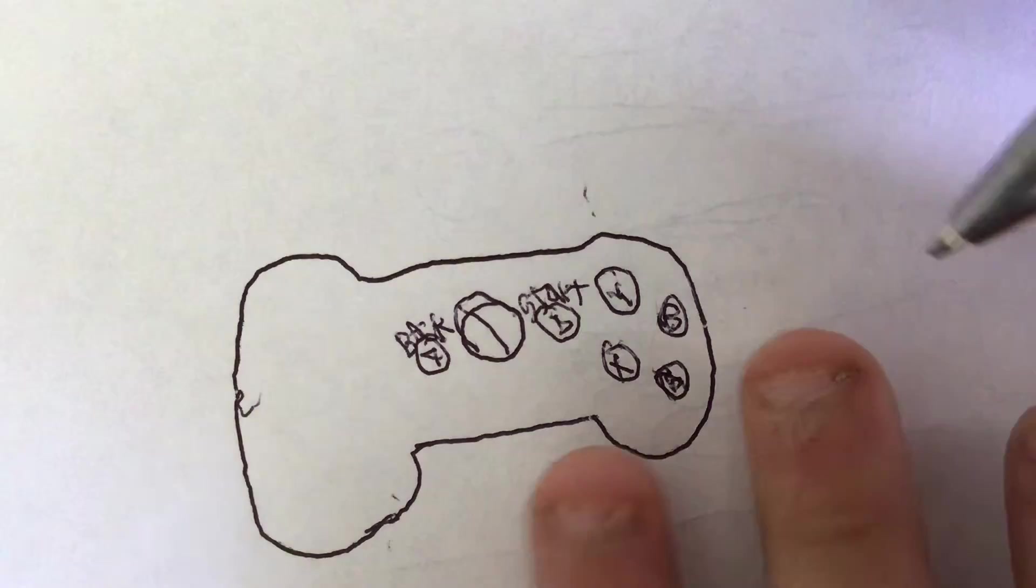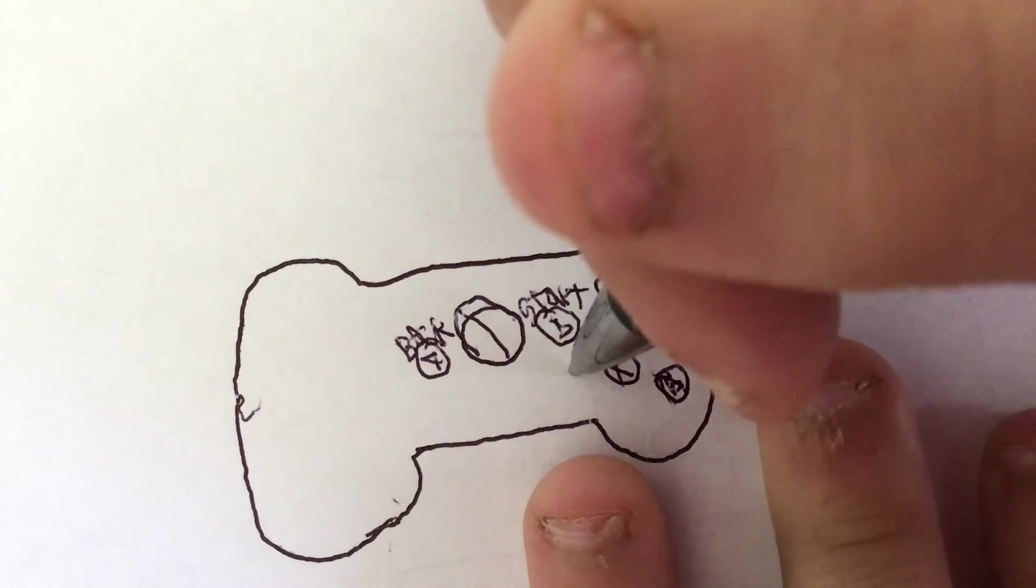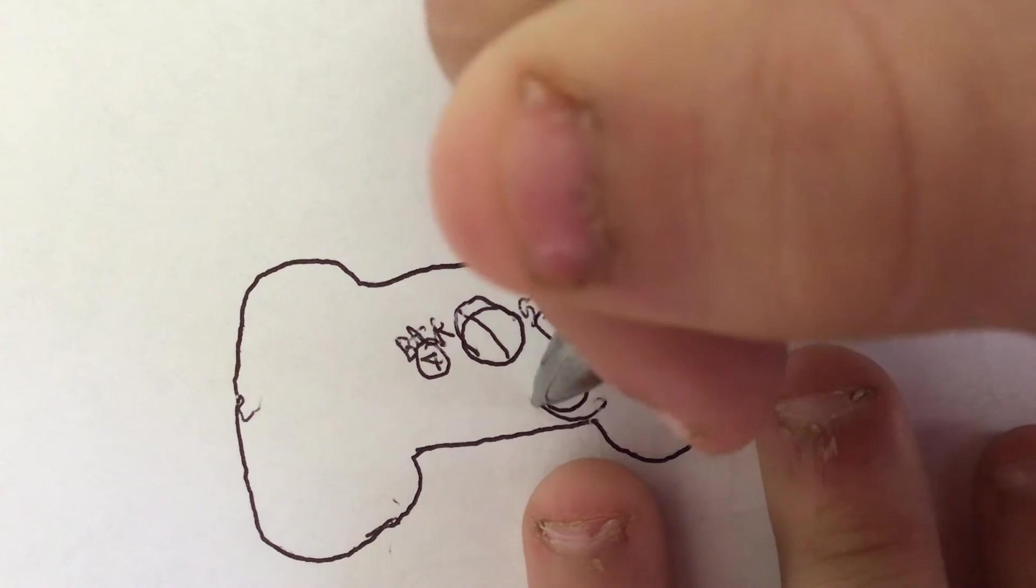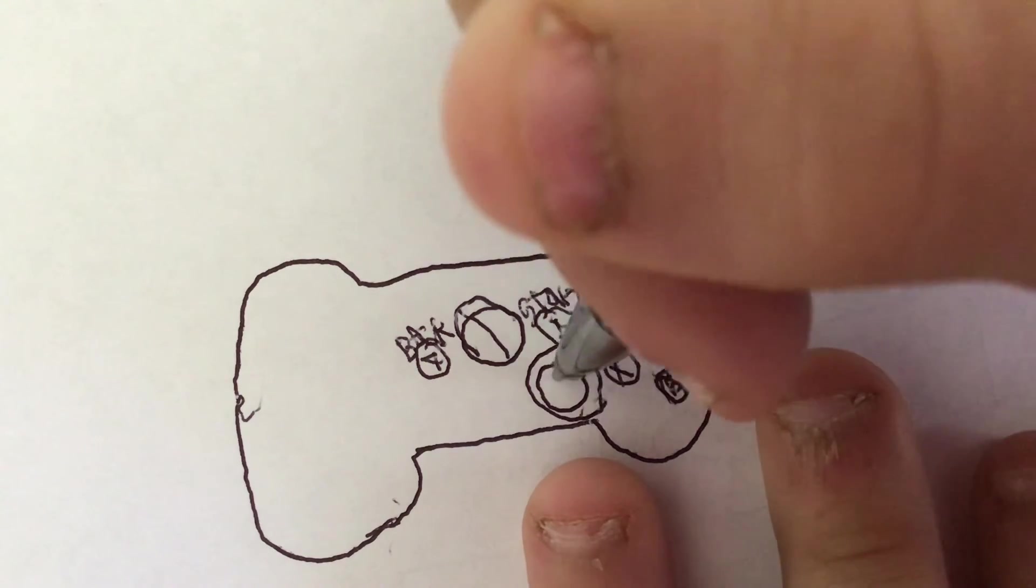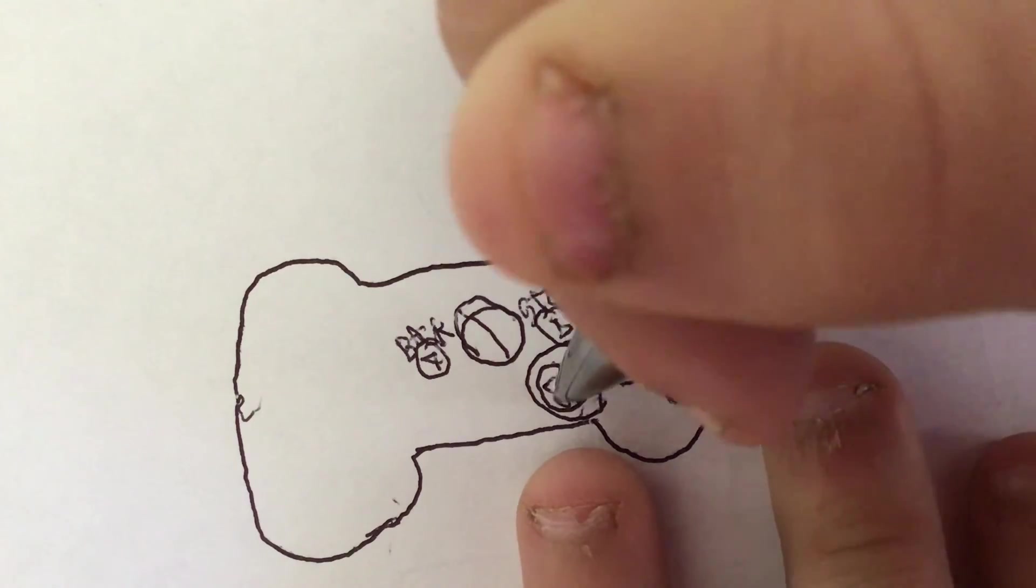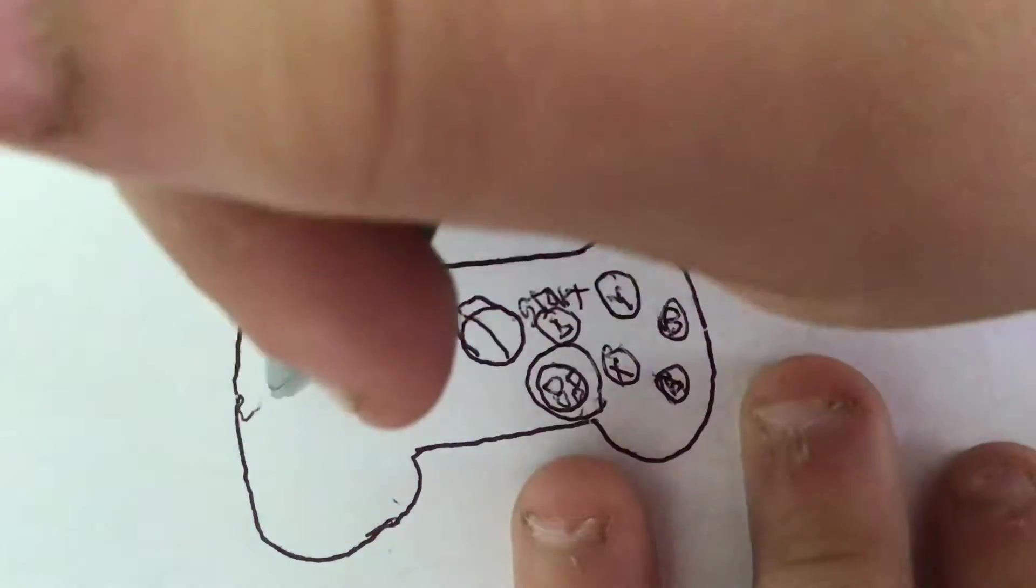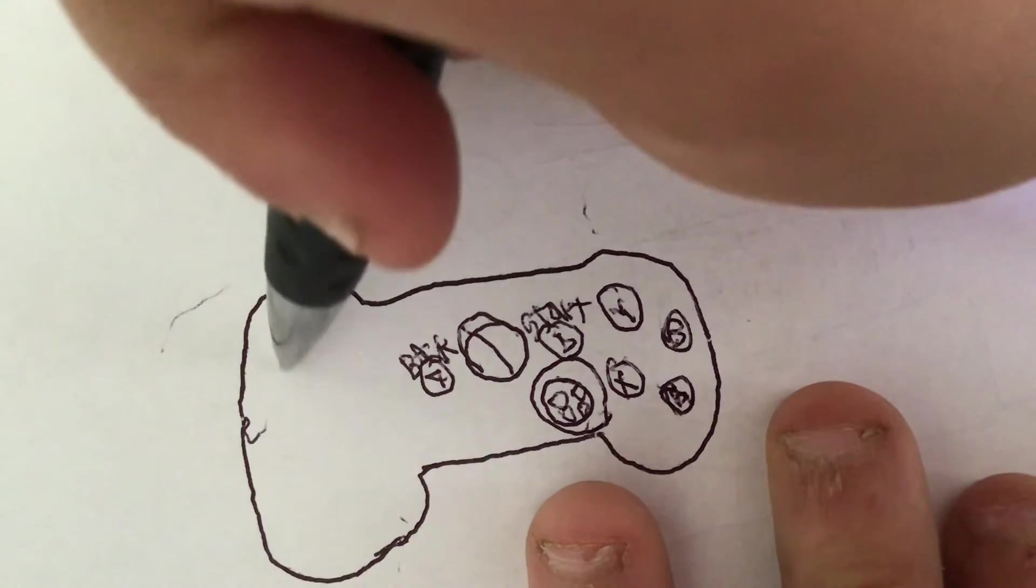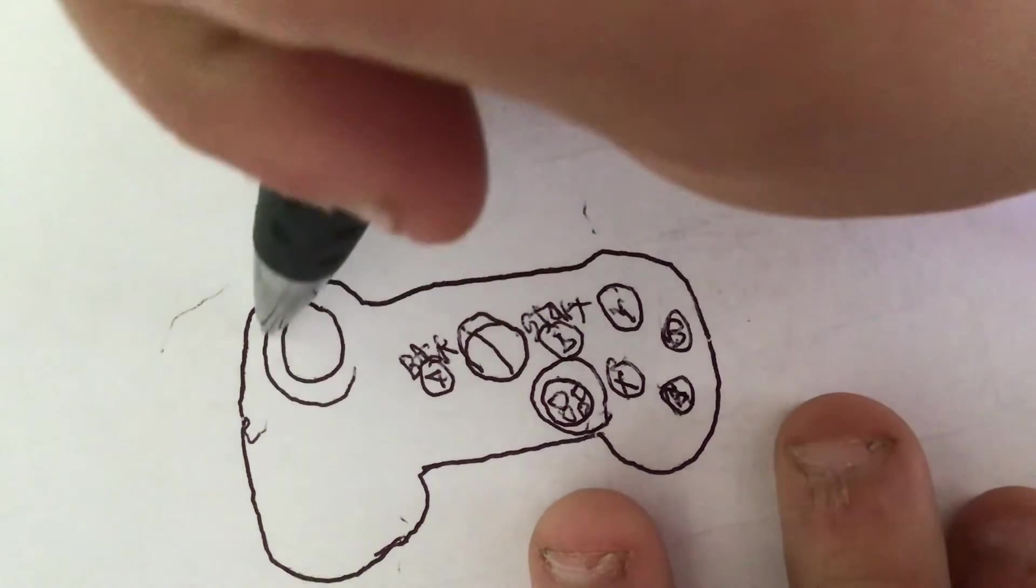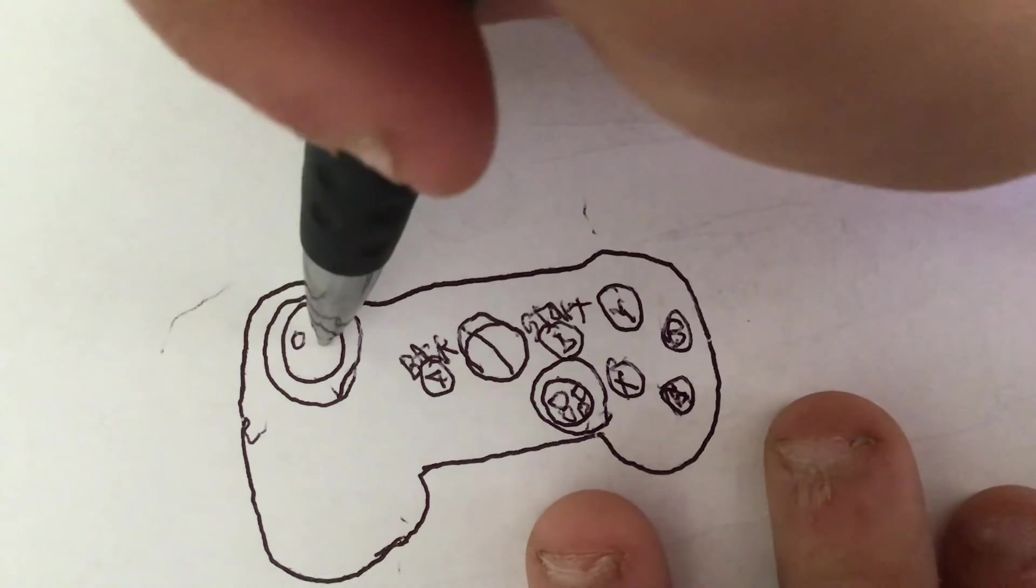And then we're going to draw a controller. We're going to draw four squares in a big circle. And then do that same thing up here. Four squares in a big circle.